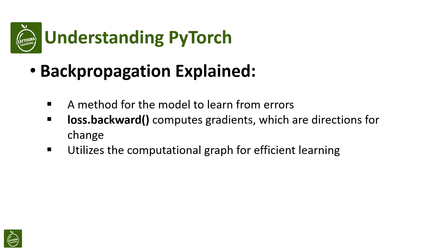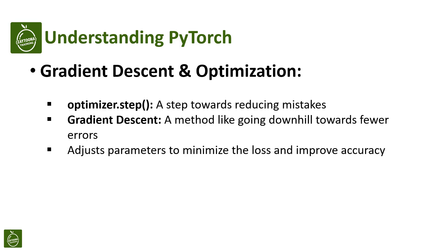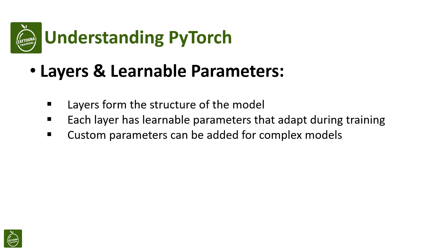PyTorch does all this using the computational graph we talked about. After figuring out the gradients, PyTorch uses them to update the model's parameters. This is done by a step called optimizer.step(). Think of it as the model taking a step in the right direction. This step uses a method called gradient descent — it is like the model going downhill towards making fewer mistakes, which means less loss.